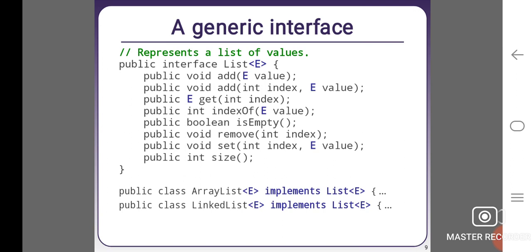A generic interface - it represents a list of values. public interface List<E> { public void add(E value); public void add(int index, E value); public E get(int index); public int indexOf(E value); public boolean isEmpty(); public void remove(int index); public void set(int index, E value); public int size(); } public class ArrayList<E> implements List<E>. public class LinkedList<E> implements List<E>.